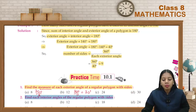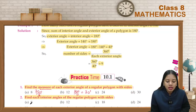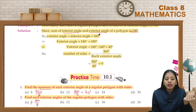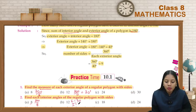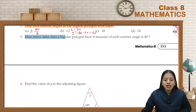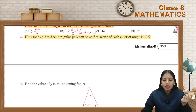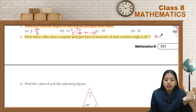Find each interior angle of a regular polygon. For 8 sides, first find the exterior angle: 360 divided by 8. We know that the sum of interior and exterior angles of a polygon is 180 degrees, so the interior angle equals 180 minus the exterior angle. For example, for 12 sides, the exterior angle is 30 degrees, so the interior angle is 180 minus 30 = 150 degrees. Similarly, how many sides does a regular polygon have if each exterior angle is 40 degrees? Number of sides = 360 divided by 40 = 9 sides.